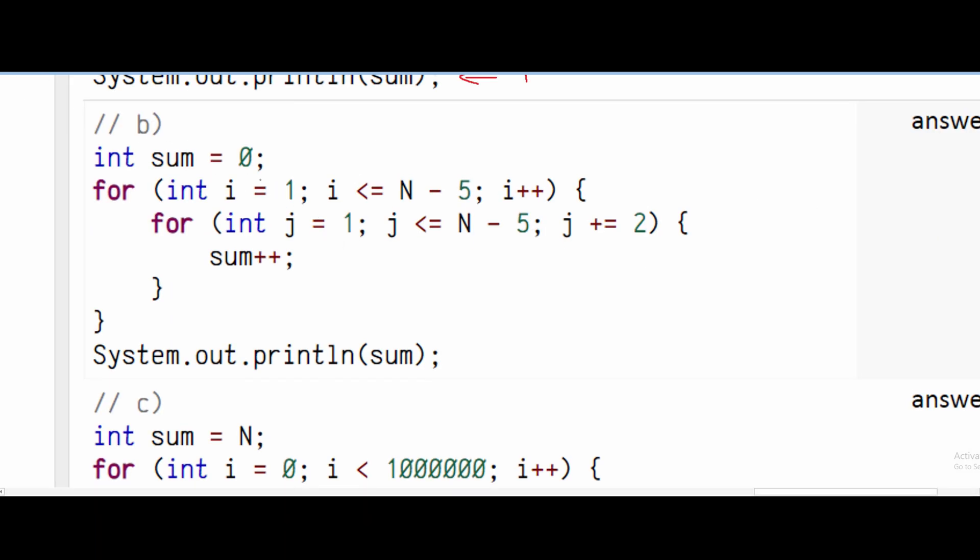For part B, we can look at these statements as executing once, and we have a for loop in here. Every time this for loop runs, this is gonna execute once, this is gonna execute once, and this is gonna execute once.